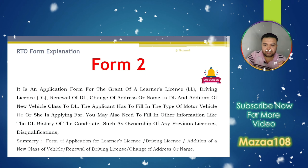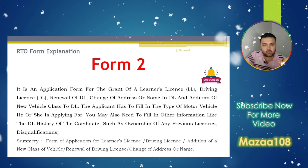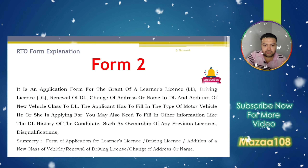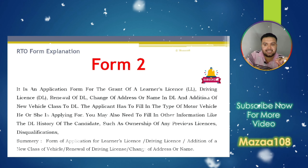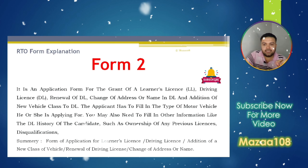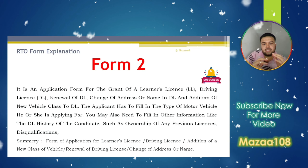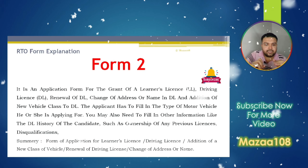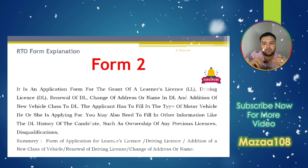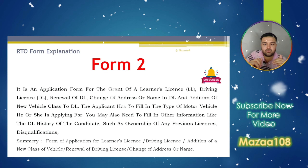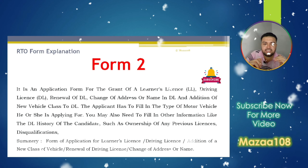Other information includes the DL history of the candidate, such as ownership of any previous license and disqualification summary. Form 2 is needed for: application for learning license, driving license, addition of a new class of vehicle, renewed driving license, and change of address or name.